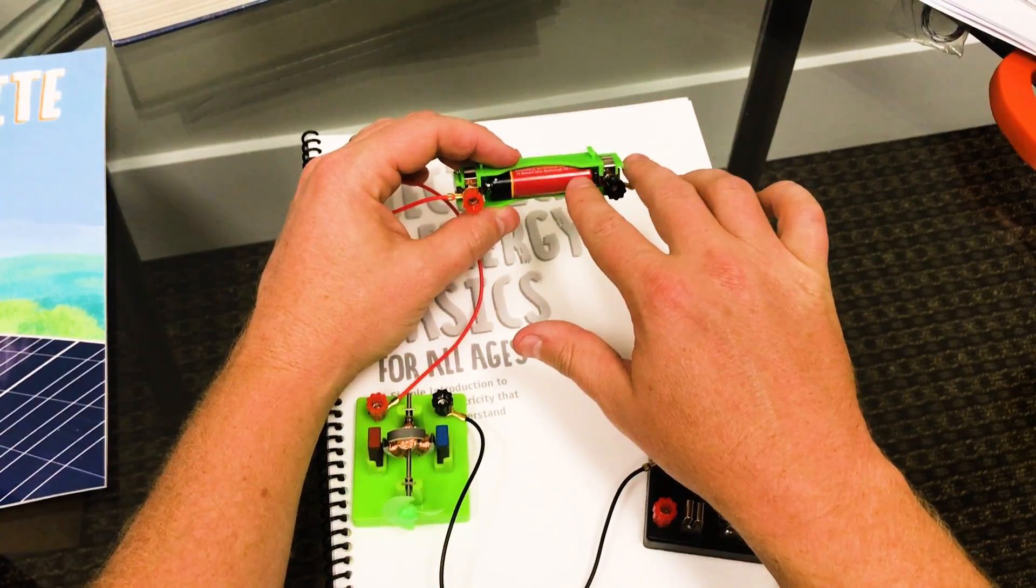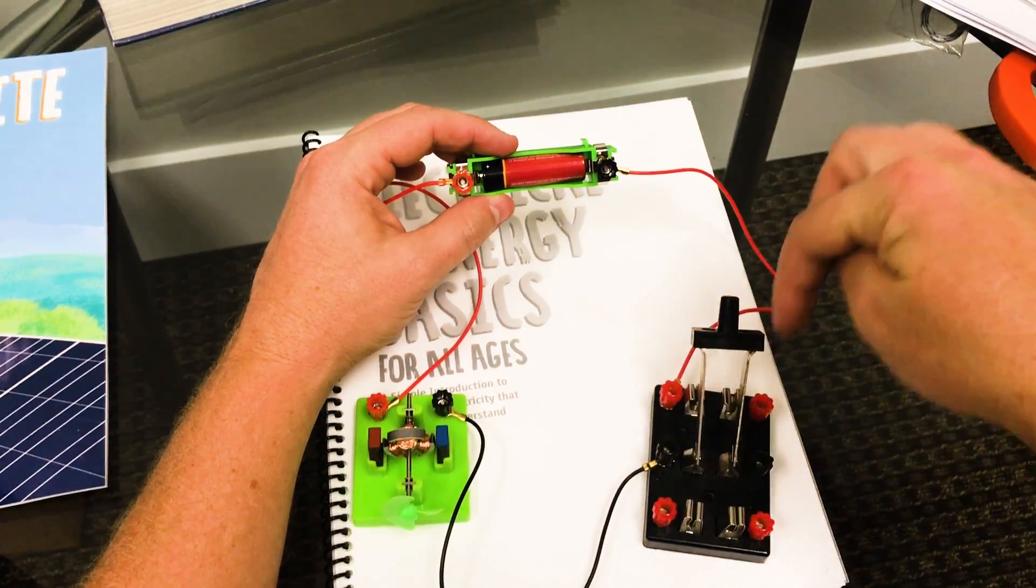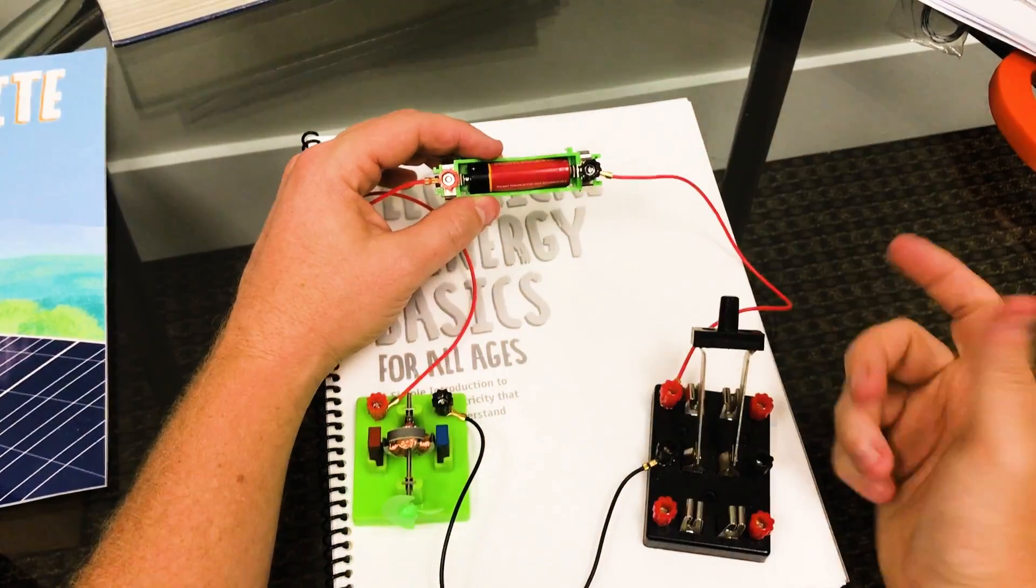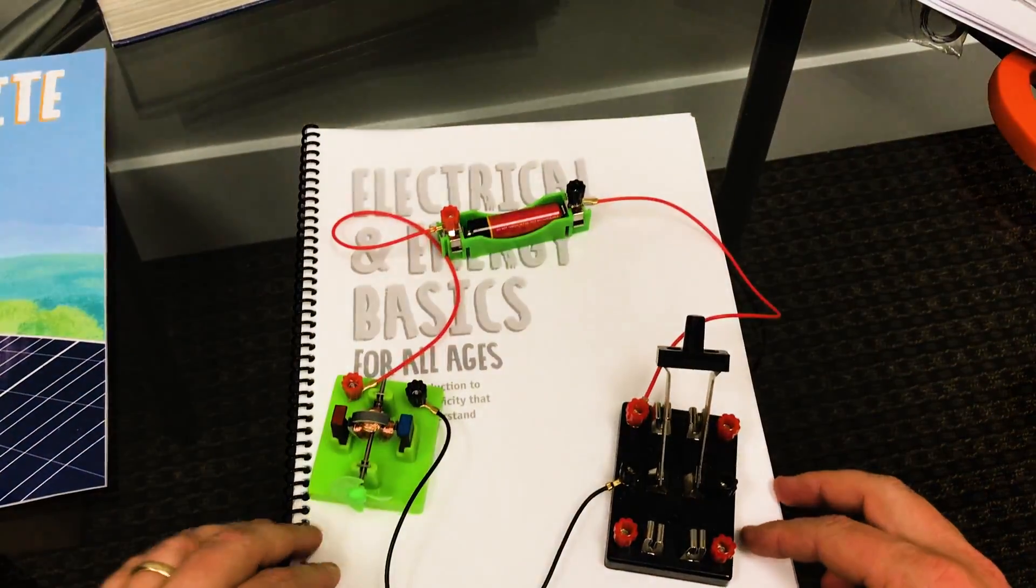is that electrons are actually stored on the negative side of a battery. So in reality, it's actually going this direction, which is often a cause of confusion. It really doesn't matter that much.